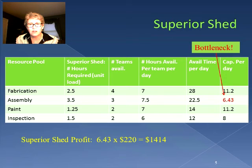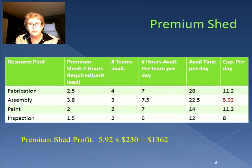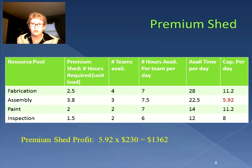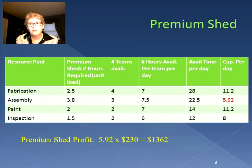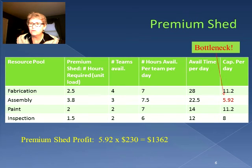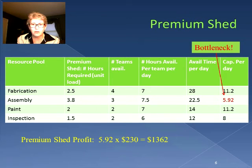Now let's look at the premium shed. With the premium shed, the unit load again changes while the available time per day stays the same, so our capacity per day is now different. In fabrication it's 11.2 sheds, assembly 5.92, paint 11.2, and inspection 8. Our bottleneck is still assembly and we can only produce 5.92 sheds. Multiplying that by the profit per shed of $230 yields $1,362.